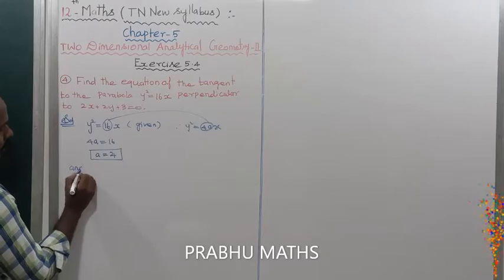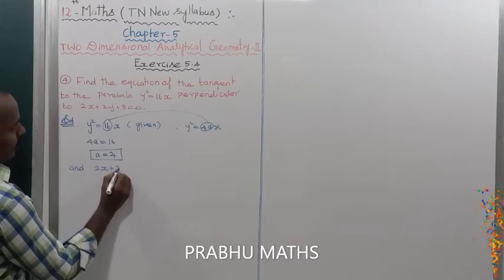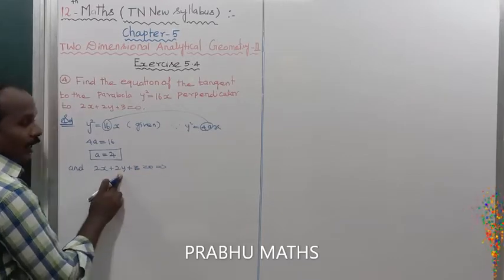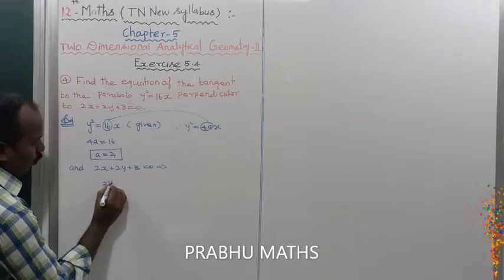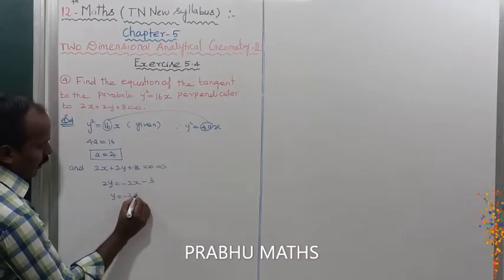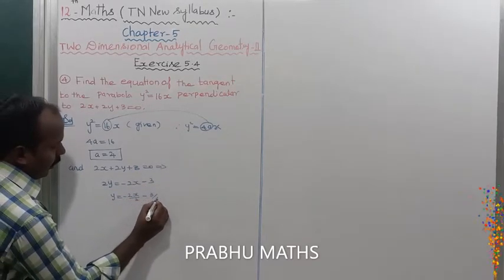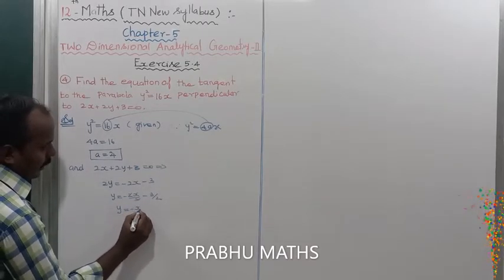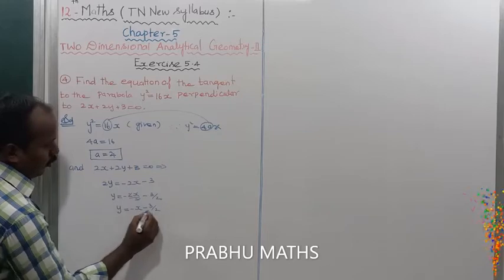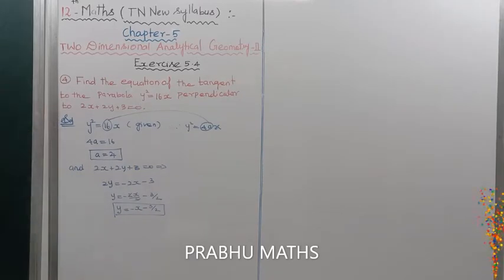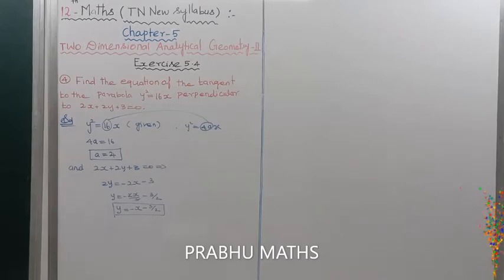The given line is 2x + 2y + 3 = 0. To find the slope, rearrange: 2y = -2x - 3, so y = -x - 3/2. That is in the form y = mx + c, where the slope is -1.